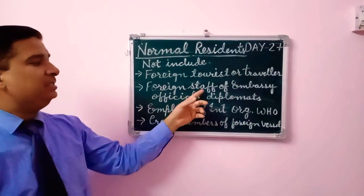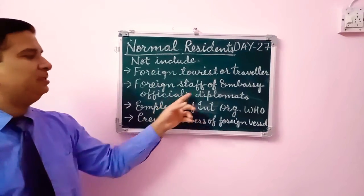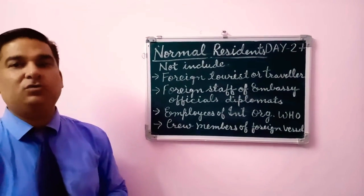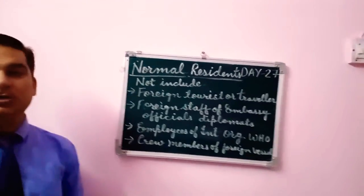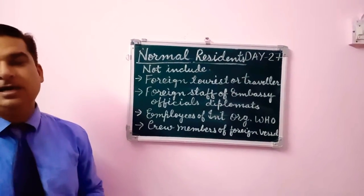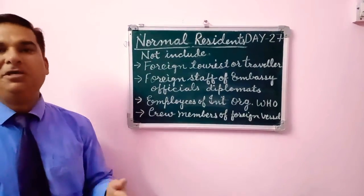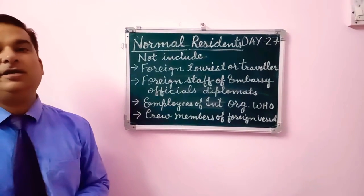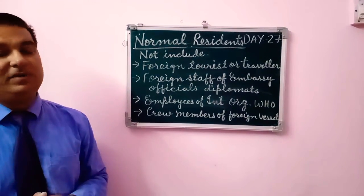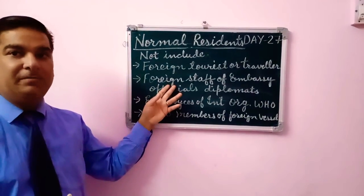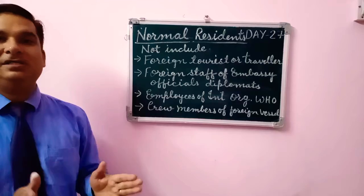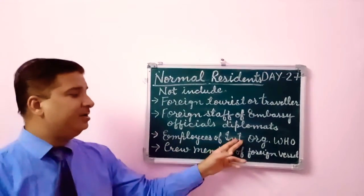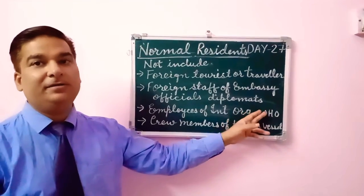Second: foreign staff of embassies — officials and diplomats. Some foreign staff, big officers, and diplomats come to India for a visit or for some time. But they do not have economic interests in India. That is why we do not include them in the definition of normal residence.